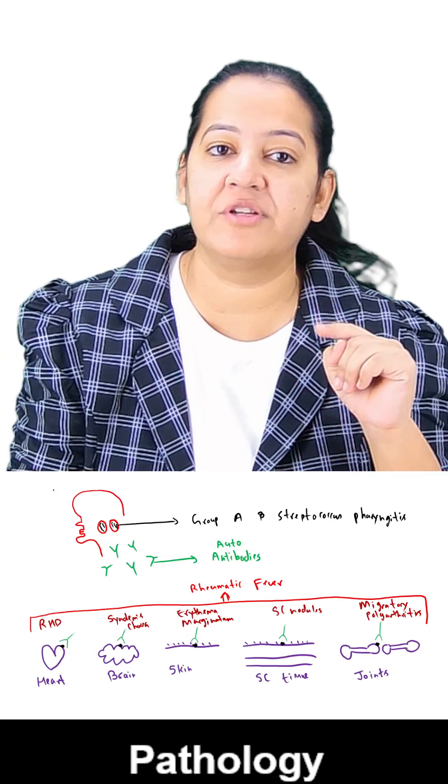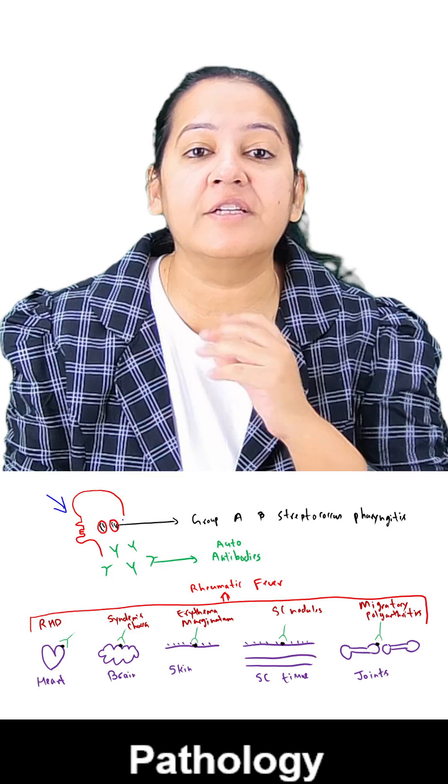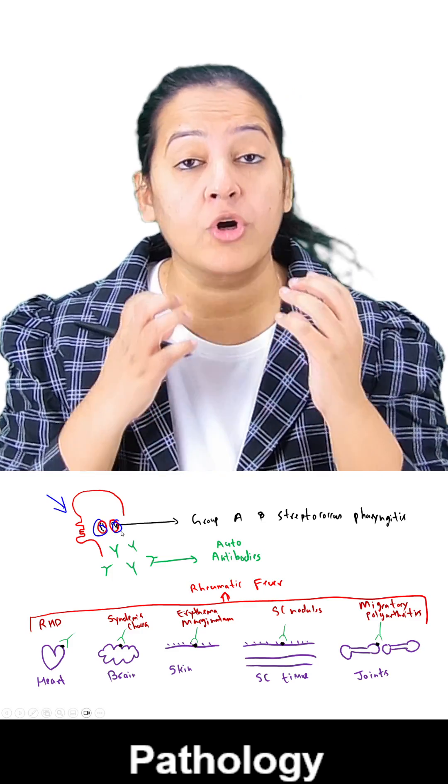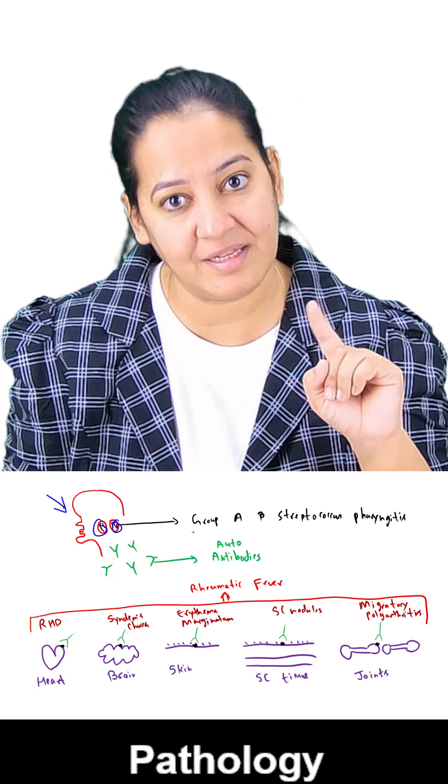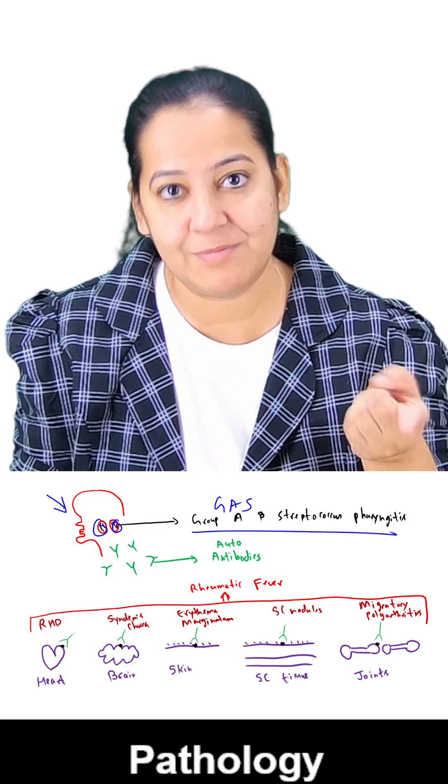Rheumatic fever is usually a disease of children. So you can see this is a person, these are the tonsils of the person. The person got tonsillitis or pharyngitis by a bacteria, the name of the bacteria is group A streptococcus bacteria.